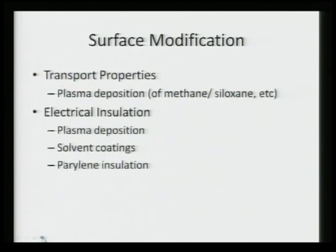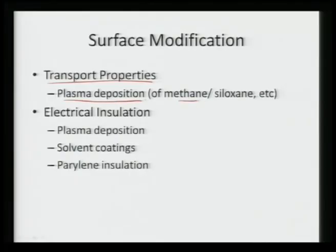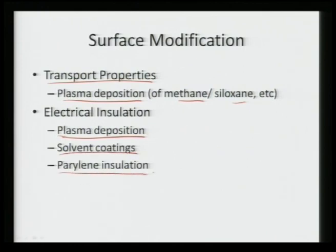In certain cases, we want to improve transport properties to enhance drug delivery or supply nutrients. We can do plasma deposition of methane or siloxanes. In some cases, we want electrical insulation — such as in a pumping heart region where leads are coming out and we want them insulated so they do not short-circuit. We can use plasma deposition, solvent coatings, or parylene insulation in those regimes.